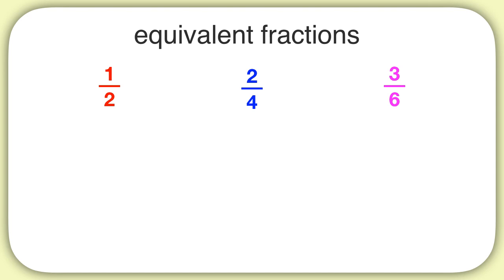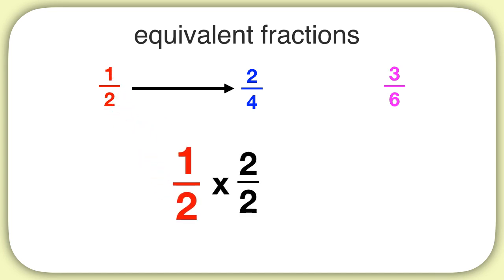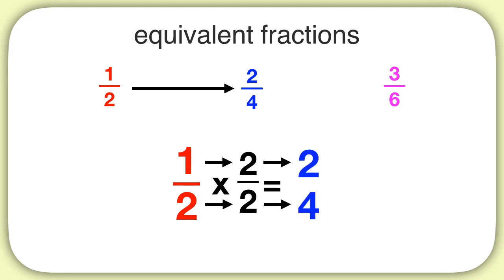Let's say you wanted to turn 1 half into 2 fourths. We can take 1 half and multiply it by 2 over 2. 1 times 2 will give us 2, and then 2 times 2 will give us 4. There is our equivalent fraction 2 fourths.